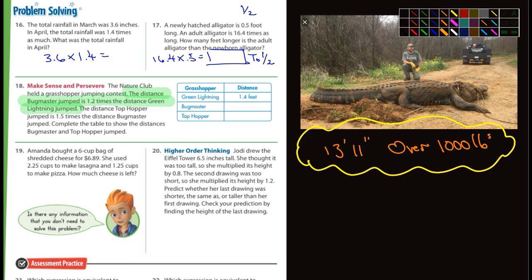It says the distance Bugmaster jumped is 1.2 times the distance of Green Lightning. So Bugmaster we don't have. Green Lightning we do, and it's 1.4. And so Bugmaster jumped 1.2 times the distance of Green Lightning. So to fill out that one, you need to do 1.4 times 1.2 equals, and that answer, whatever you get there, that answer goes there.